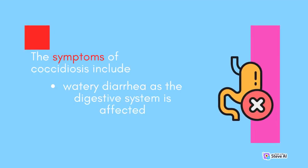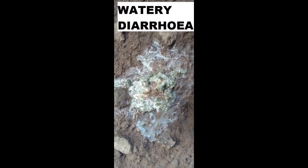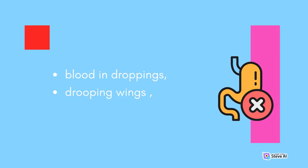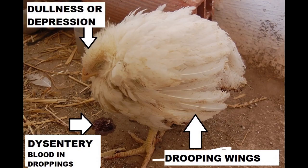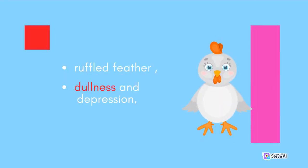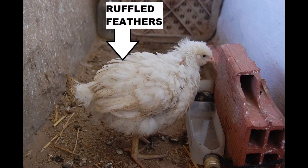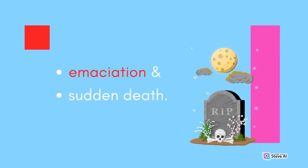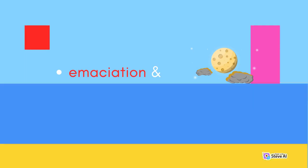The symptoms of coccidiosis include watery diarrhea as the digestive system is affected, blood in droppings, drooping wings, ruffled feathers, dullness and depression, emaciation, and sudden death.